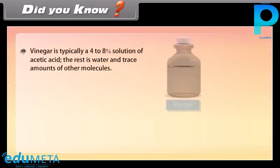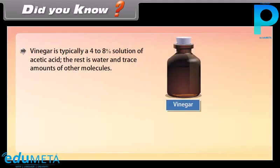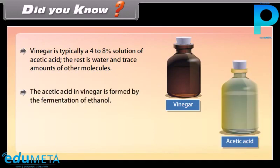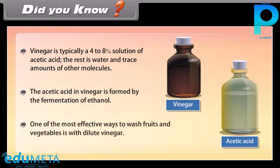Did you know: vinegar is typically a 4–8% solution of acetic acid; the rest is water and trace amounts of other molecules. The acetic acid in vinegar is formed by the fermentation of ethanol. One of the most effective ways to wash fruits and vegetables is with dilute vinegar.